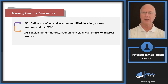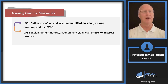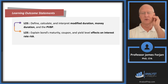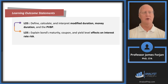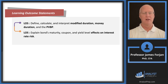We're also going to calculate. We calculated Macaulay duration before. We're going to calculate modified duration, money duration, and what I think of as price duration — but the reading calls it the price value of a basis point. Some people call it the present value of a basis point or the dollar value of a basis point.